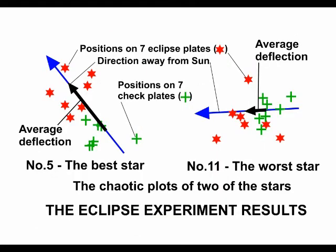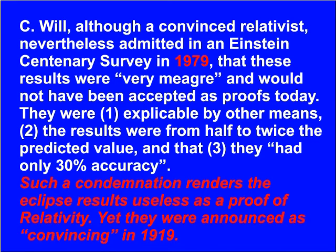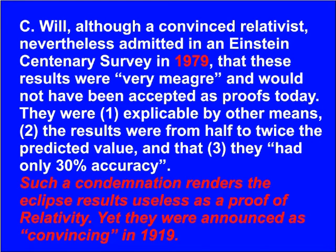Here are the results of plotting of two of the stars, and how chaotic they are can be seen. To be convincing, all the check star plots — the green crosses — should be close together, and the eclipse star plots — the red stars — should also be close together. But you can see how almost random they are. C. Will, although a convinced relativist, nevertheless admitted in an Einstein centenary survey in 1979 that these results were very meagre and would not have been accepted as proofs today. They were explicable by other means, the results were from half to twice the predicted value, and they had only 30% accuracy. Such a condemnation renders the eclipse results useless as a proof of relativity.